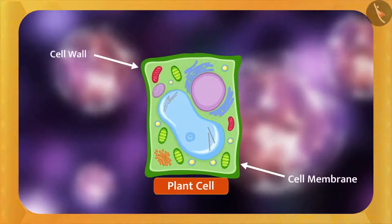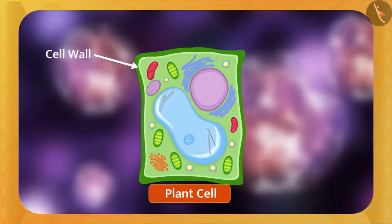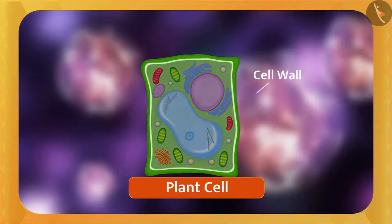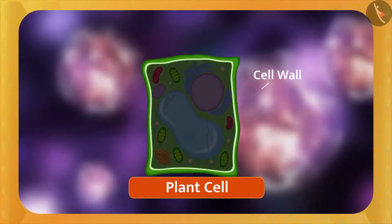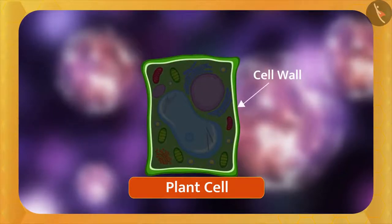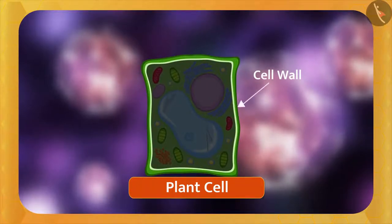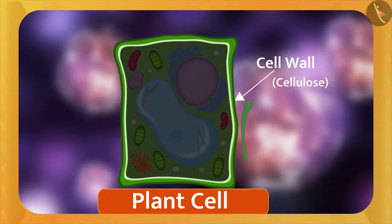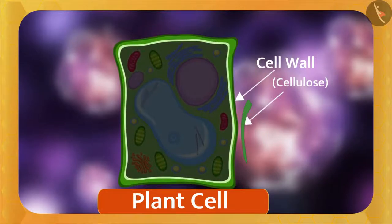First, let us know what is a cell wall. Cell wall is the outermost layer and it is present only in the plant cell. It surrounds the entire plant cell. Friends, you must have noticed that the plants are a bit rigid and complex. The reason for this is the cell wall, as it is made up of a complex substance called cellulose. It is very thick and rigid and provides structural support to the plant.